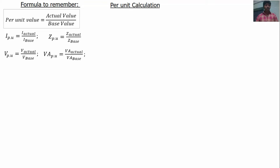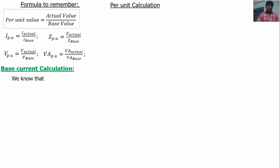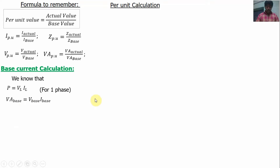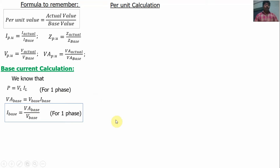In the transformer, power is represented as VA. For base current calculations: we know that power S equals V_L times I_L for single phase, so VA base equals V base times I base, and therefore I base equals VA base divided by V base for a single phase system. This is the relation between I base, VA base, and V base. If VA base and V base are given, use this formula to calculate I base.